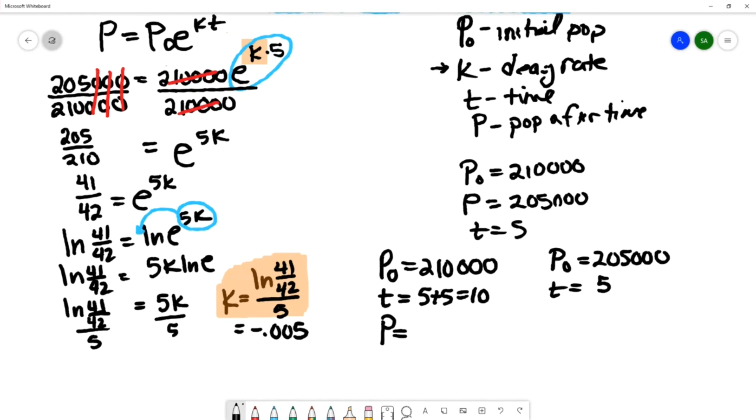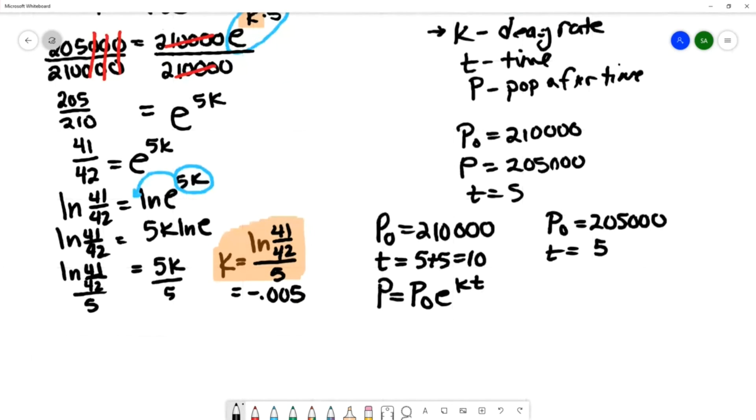Our model is P equals P₀e^(kt). We can substitute these values in: 210,000 e^(ln(41/42)/5 × 10). So times 10.